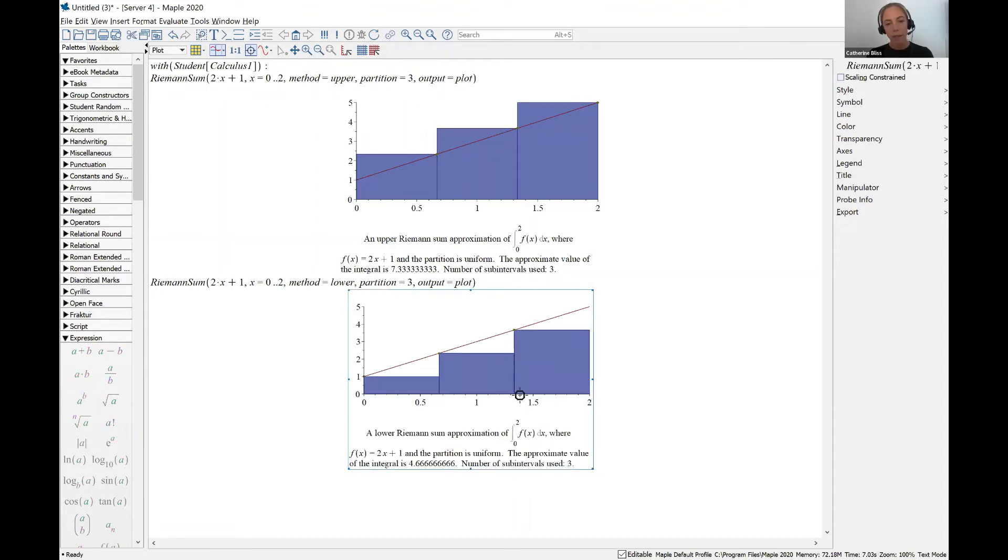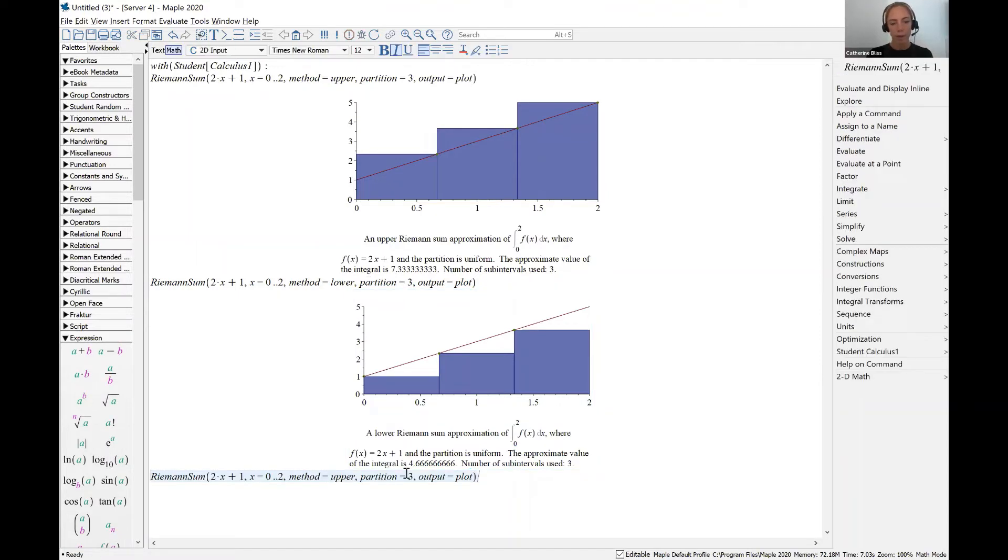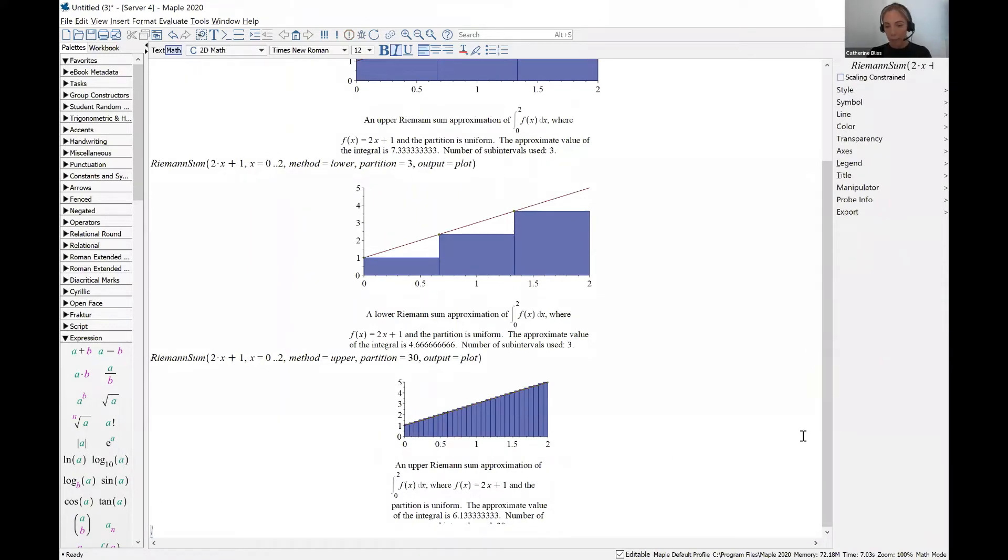And then we can also go through here and we could increase the number of partitions. So let's go back to an upper sum and let's increase the number of partitions to 30. Well, that looks like a much better approximation because those little rectangles are picking up all of the nuances of the function much nicer. So that estimate was 6.13 repeating.